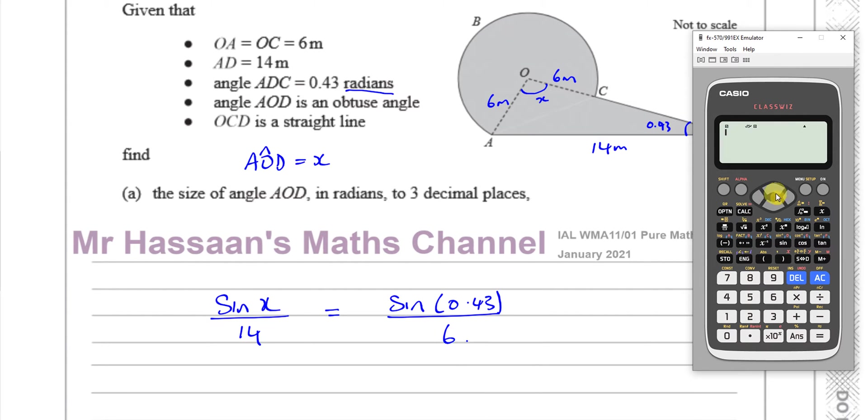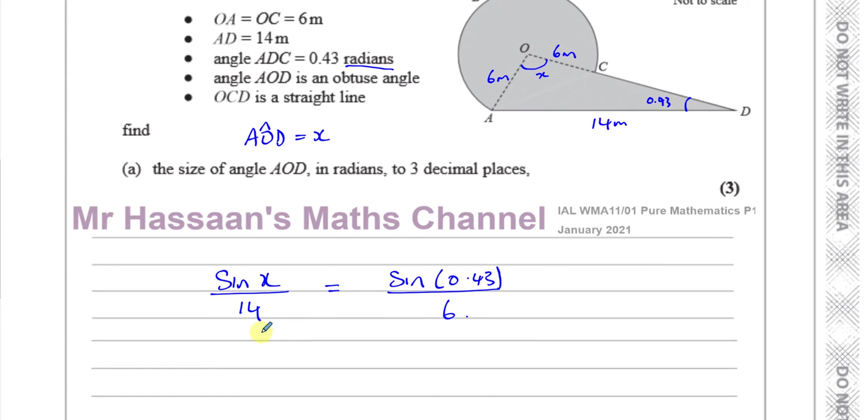We can use our calculators here, but we have to be very careful that we change everything into radian mode. So, I'm going to change the mode into radian mode. I go to angle unit 2. It has to be in radian mode because we're using trigonometry with radians.